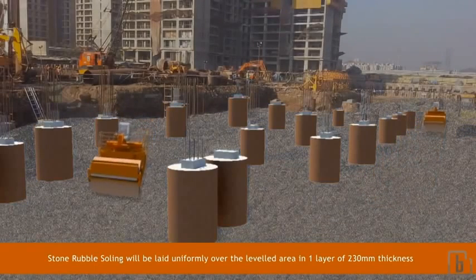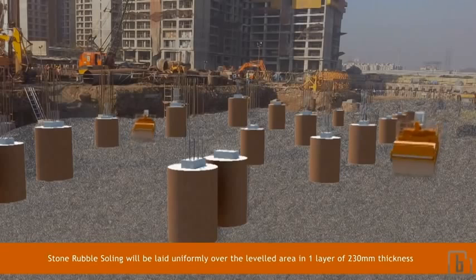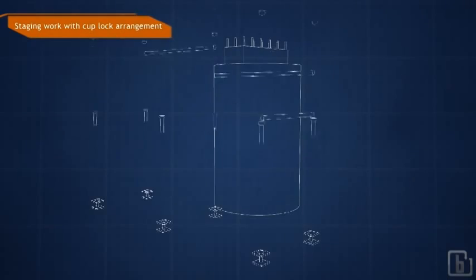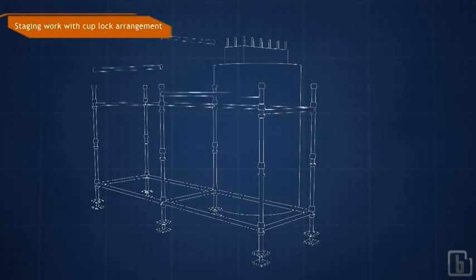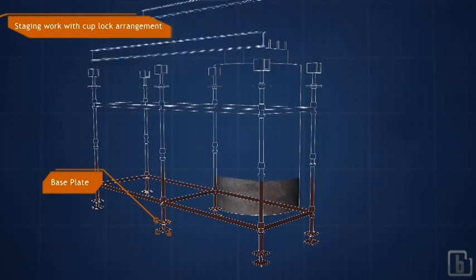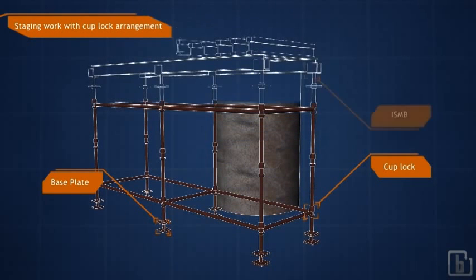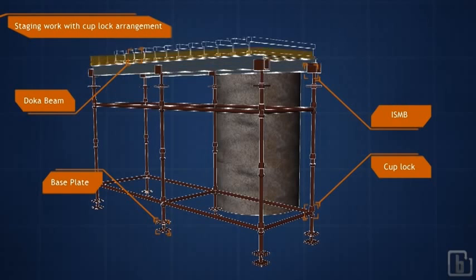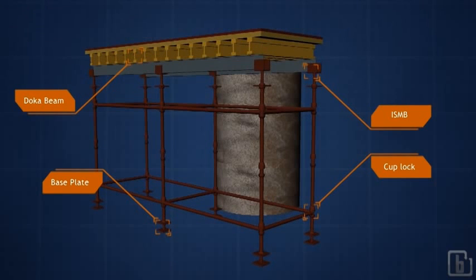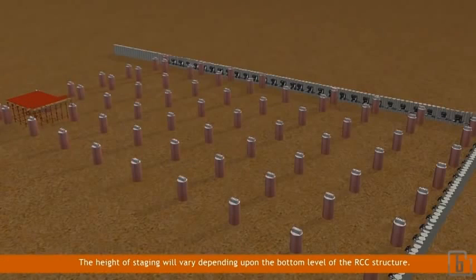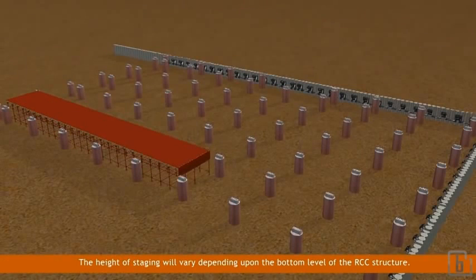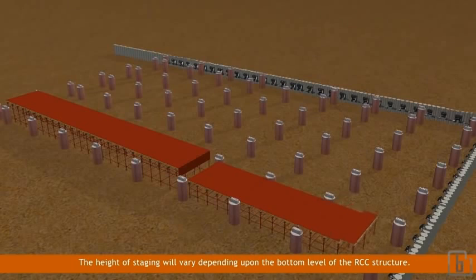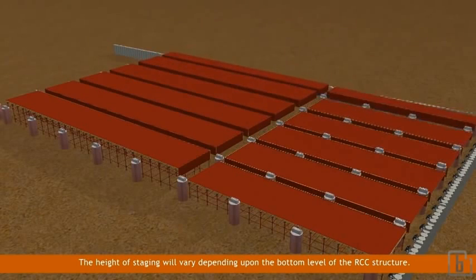Staging and bottom shuttering: staging work will be started with cuplock arrangement. The height of staging will vary depending upon the bottom level of the RCC structure. After placing of bottom shutter as per required level and position, rebar work for slab and beam will commence.